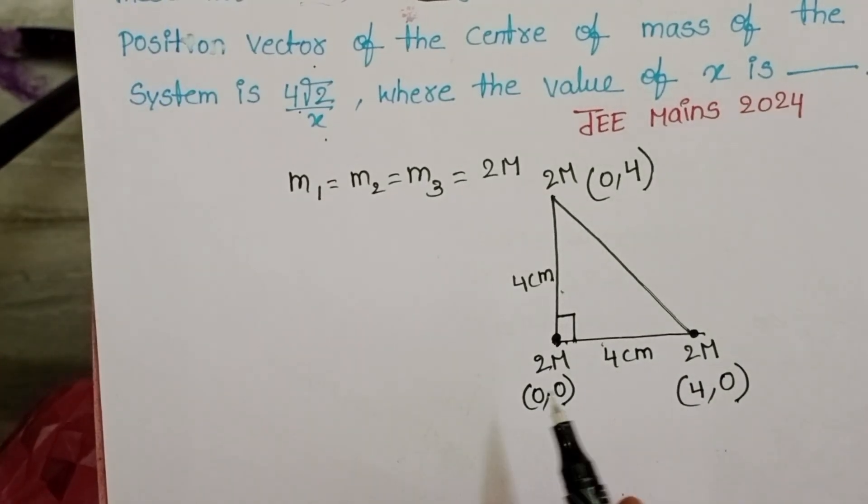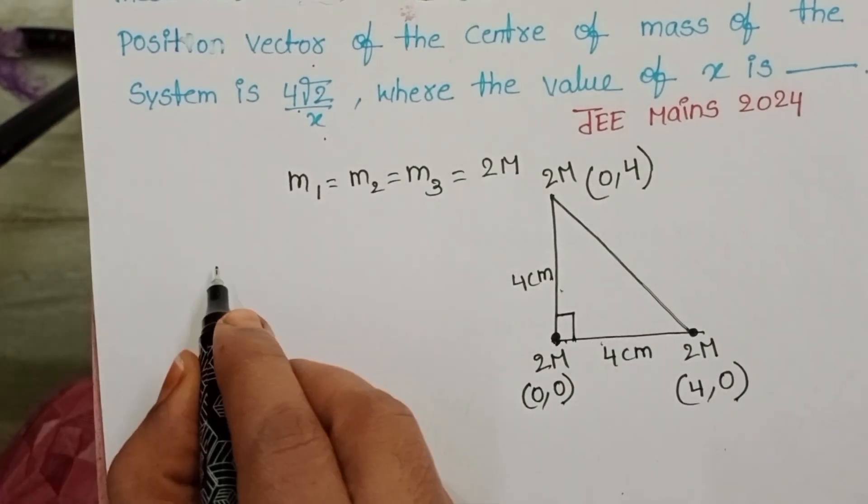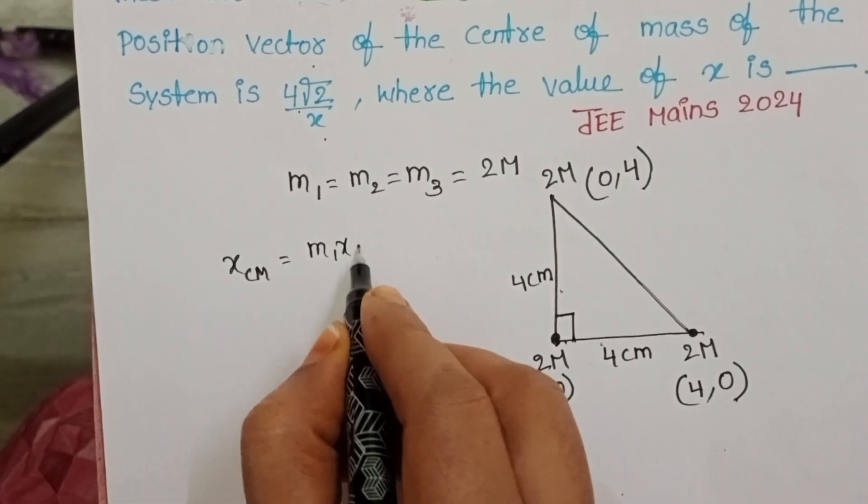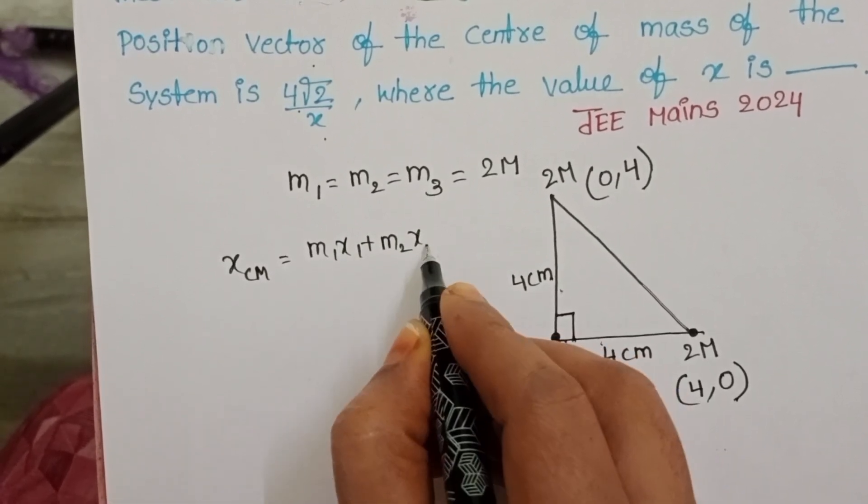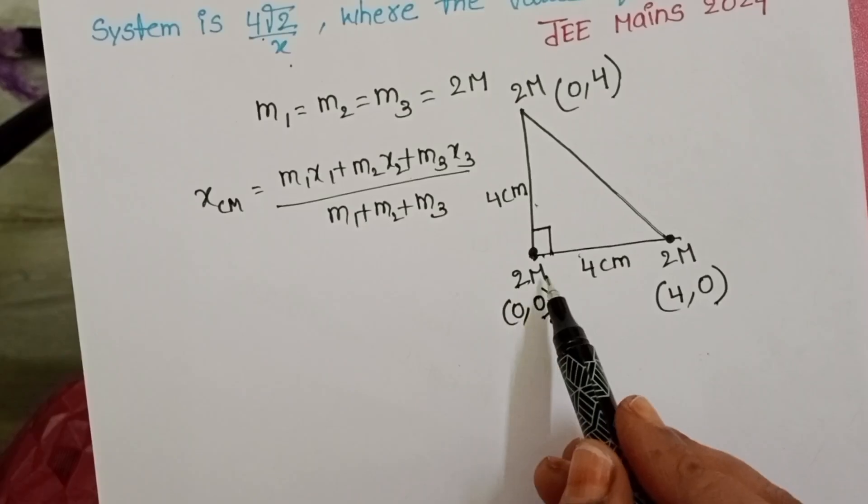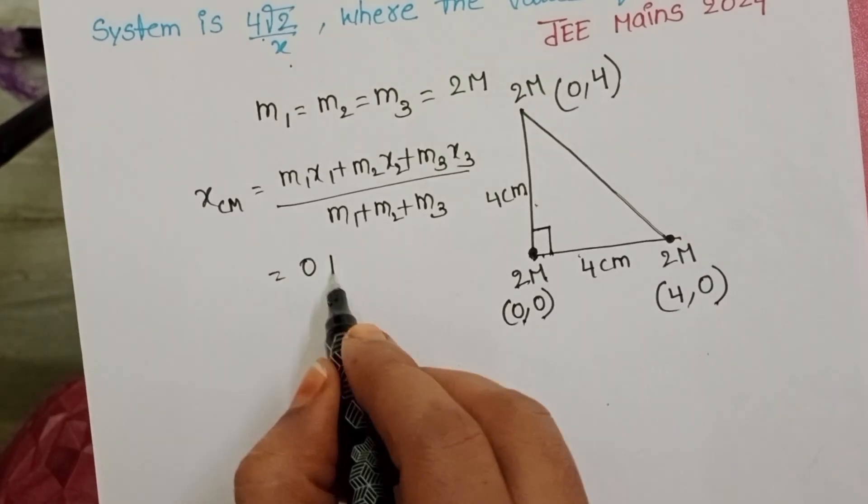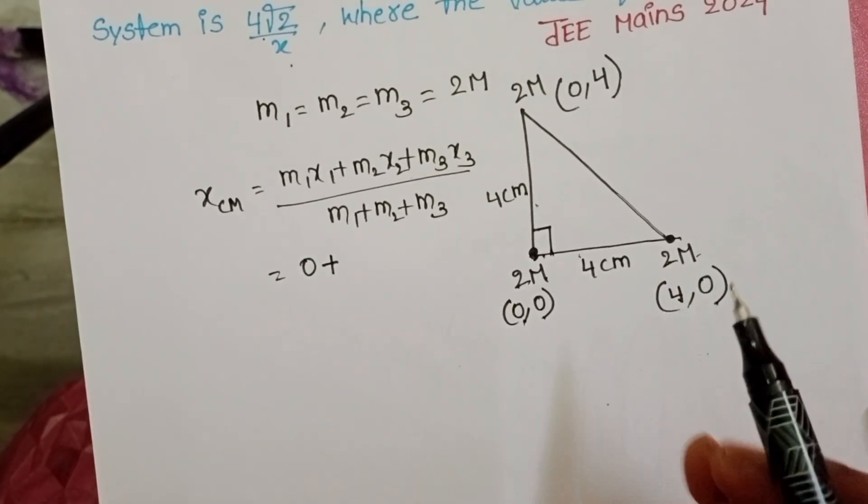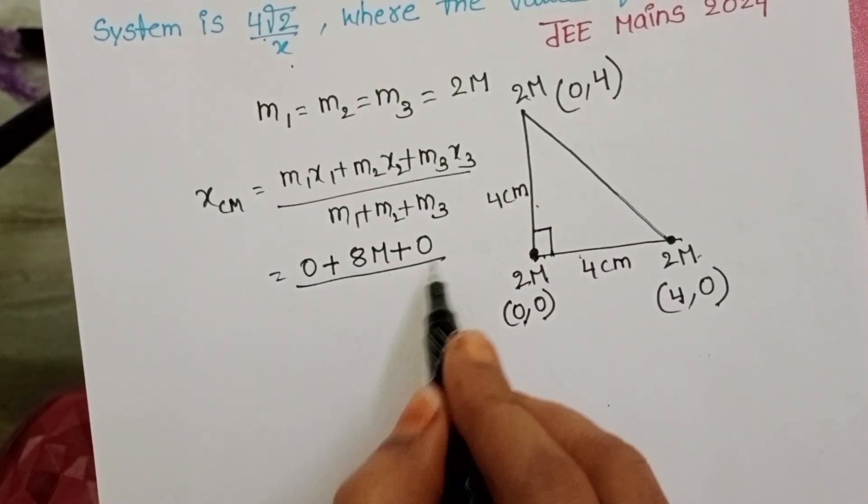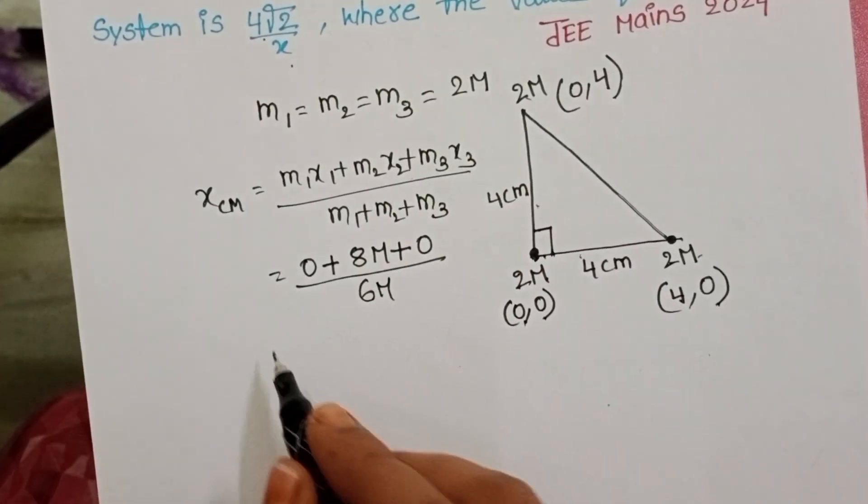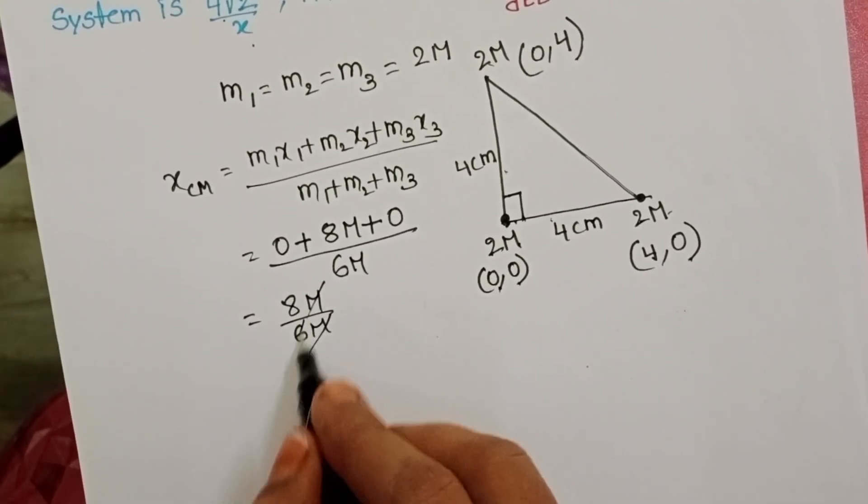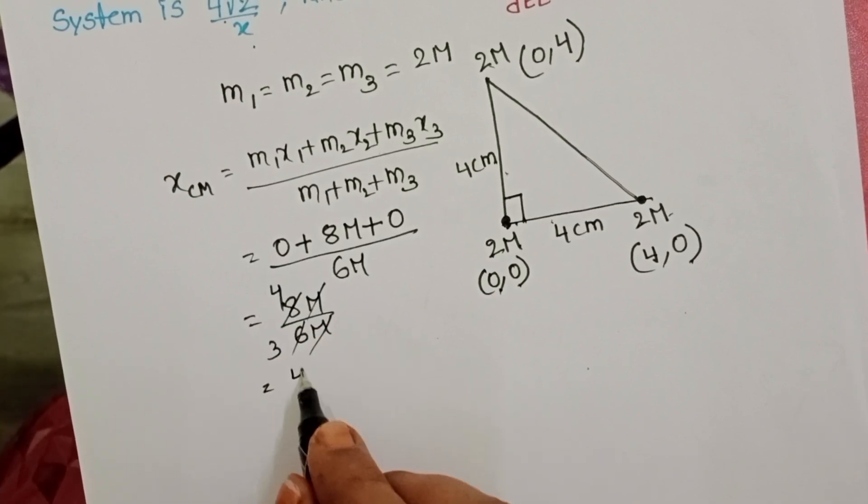The formula to calculate the position of center of mass along the x-direction is m1 x1 plus m2 x2 plus m3 x3 by m1 plus m2 plus m3. 2m into 0, 0 plus 2m into 4, 8m plus 2m into 0, 0 and total mass is 6m. 8m by 6m, m gets cancelled, 4 by 3.